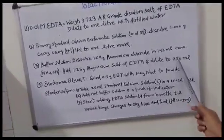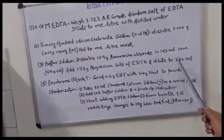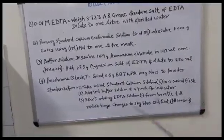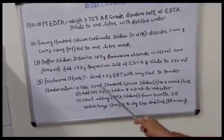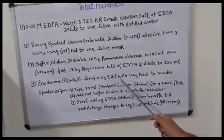This buffer is used to maintain the pH at 10 plus or minus 0.1. Eriochrome Black T is our indicator.